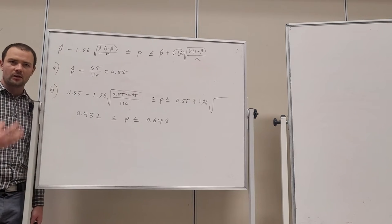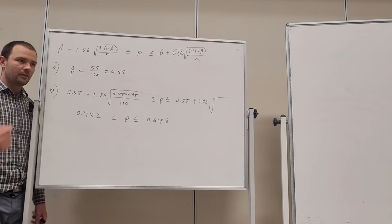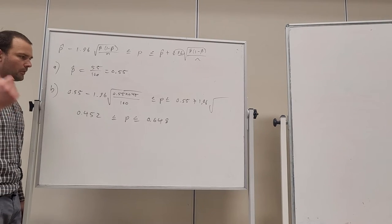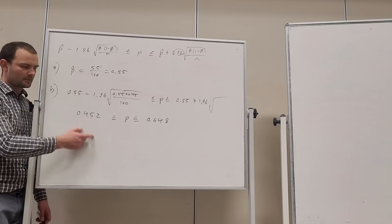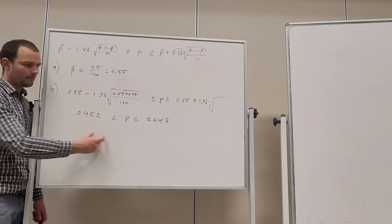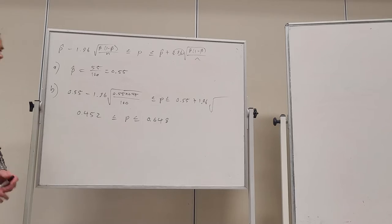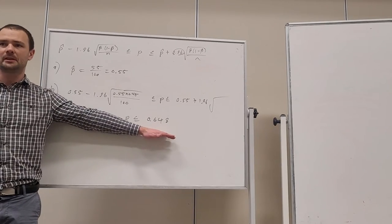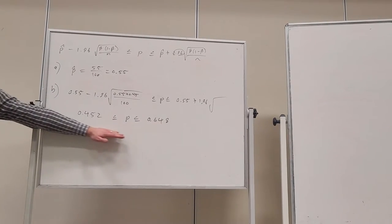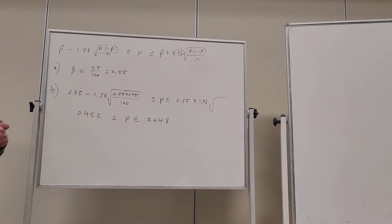Here, this confidence interval, we are 95% confident that the true proportion of people that play Fortnite is somewhere between 0.45 and 0.648. So, it could be as high as 64% based on our evidence here, and it could be as low as 45%. That's going to be our answer.